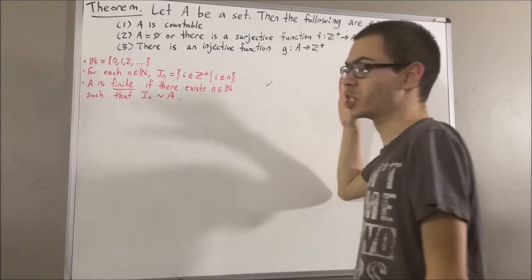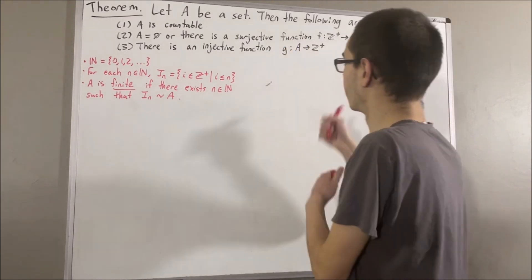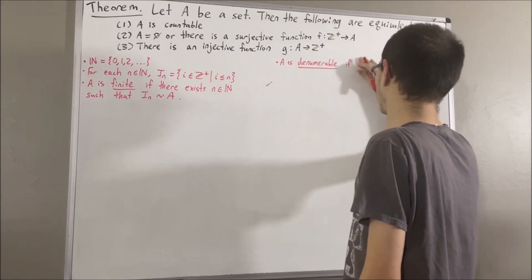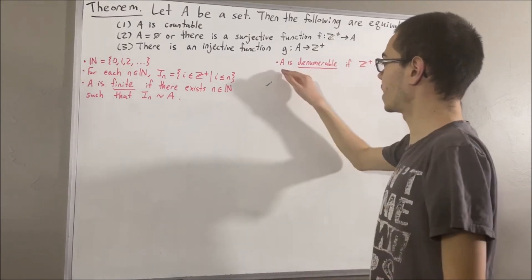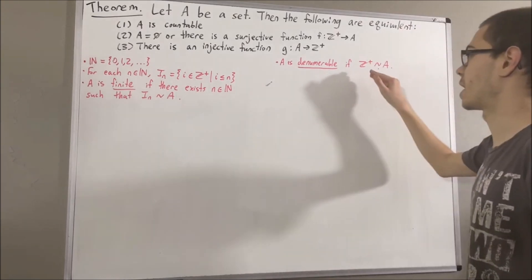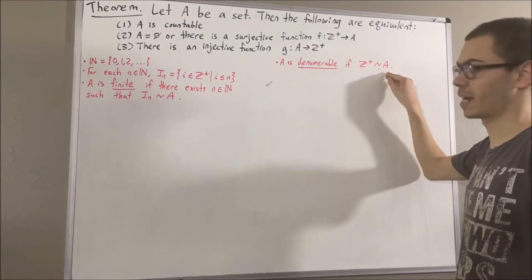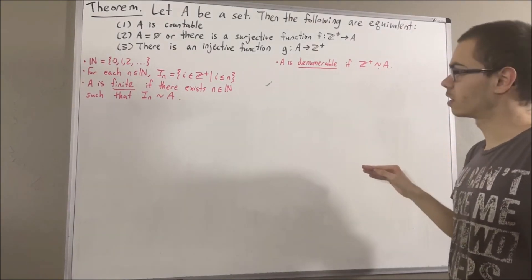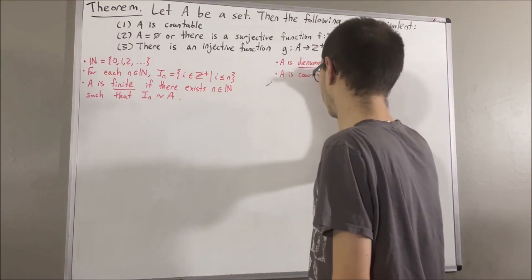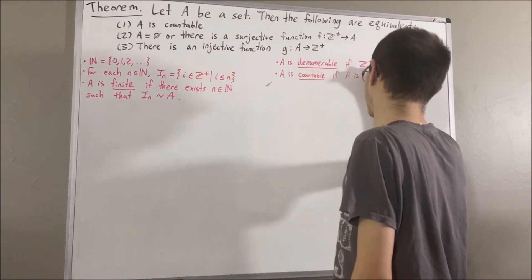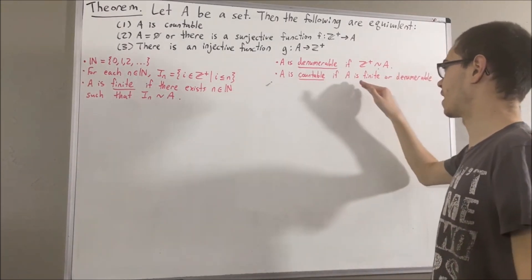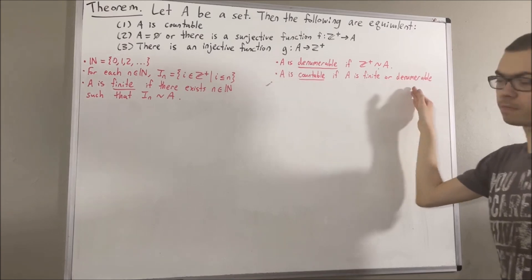Our definition of a denumerable set is as follows. We say A is denumerable if there exists a bijection from the positive integers to A. And our definition of a countable set is as follows: we say A is countable if A is finite or denumerable.